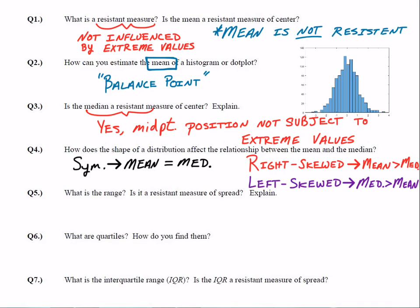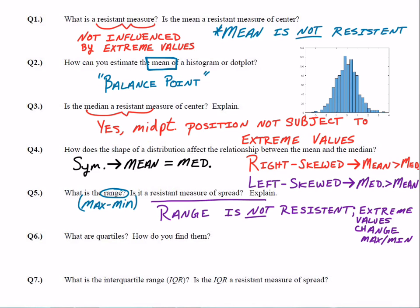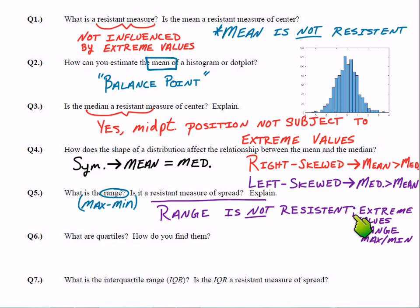Q5: What is the range? The range is simply the max minus the min — the highest value minus the lowest value. Is it a resistant measure of spread? Absolutely not. Extreme values can directly change the max or min, and our max and mins might be outliers themselves, so the range could be a really big number based on those. Range is definitely not resistant.